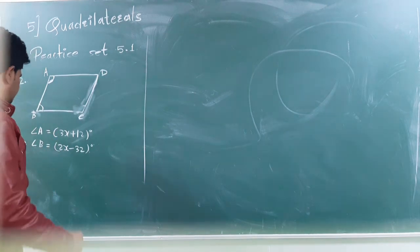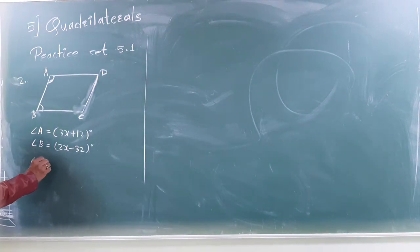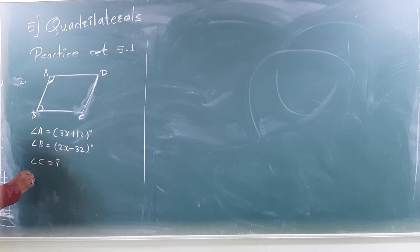Then, find the remaining angles C and D. We have to also find here, what is the measure of angle C and what is the measure of angle D. So, look at here.